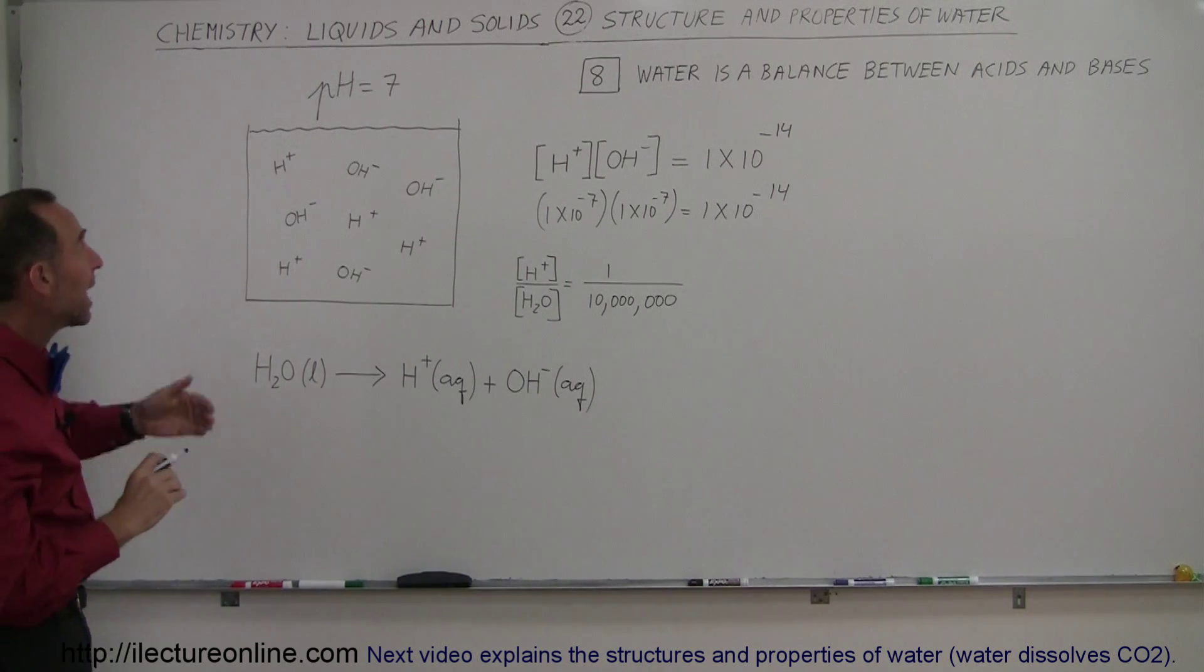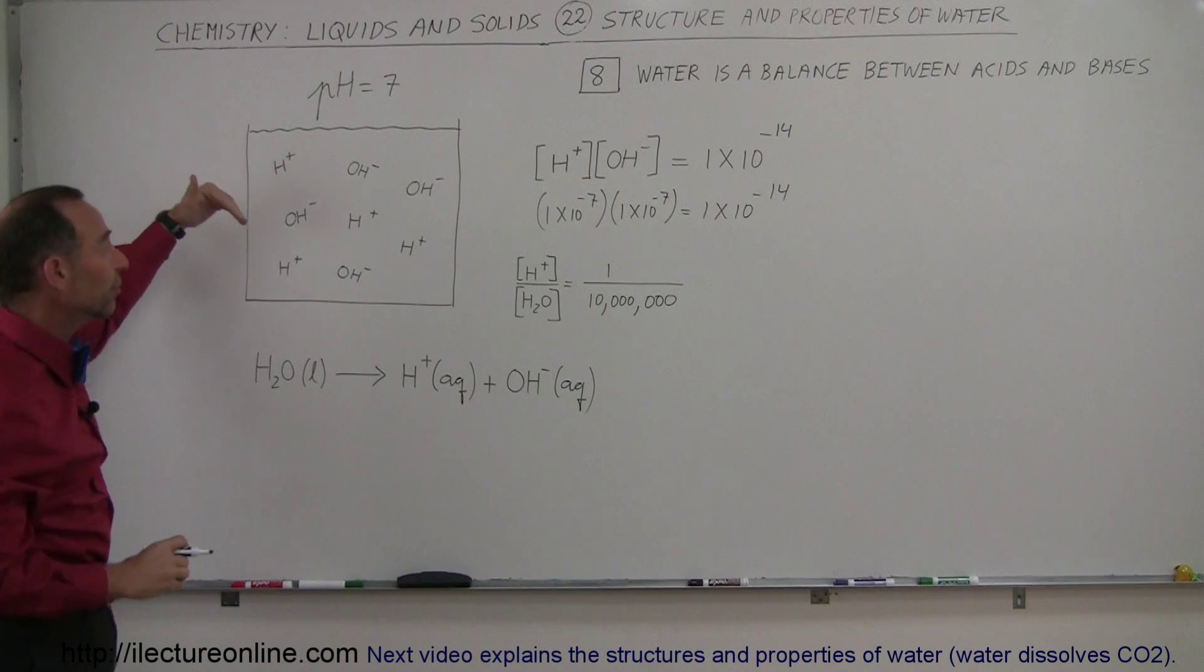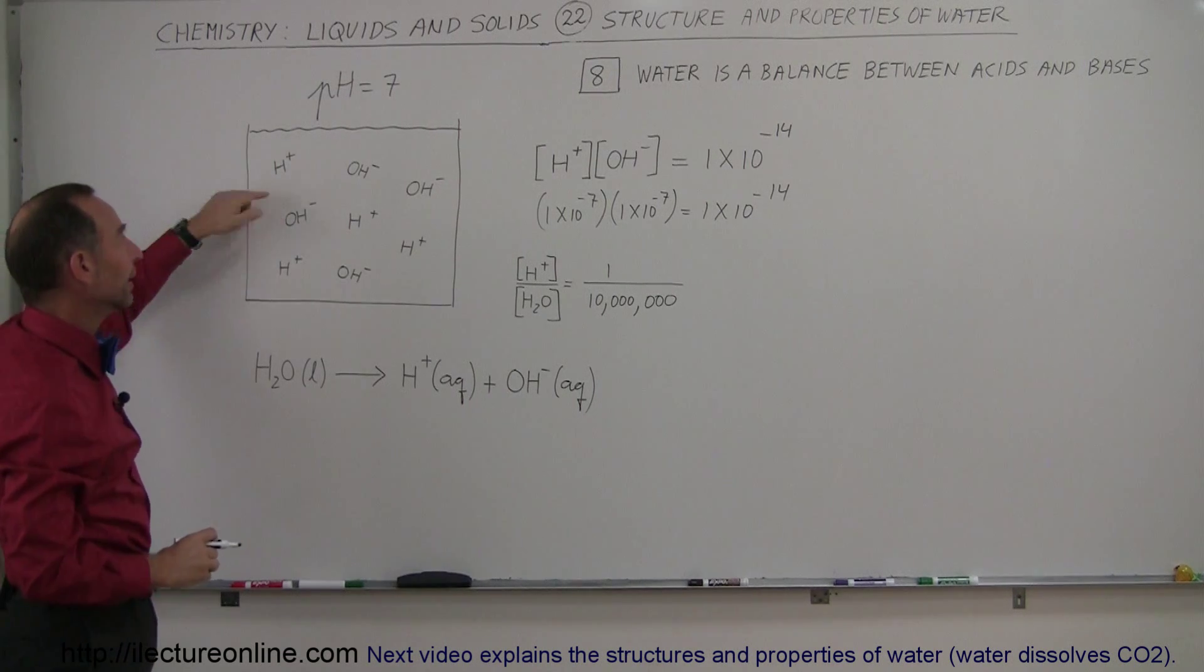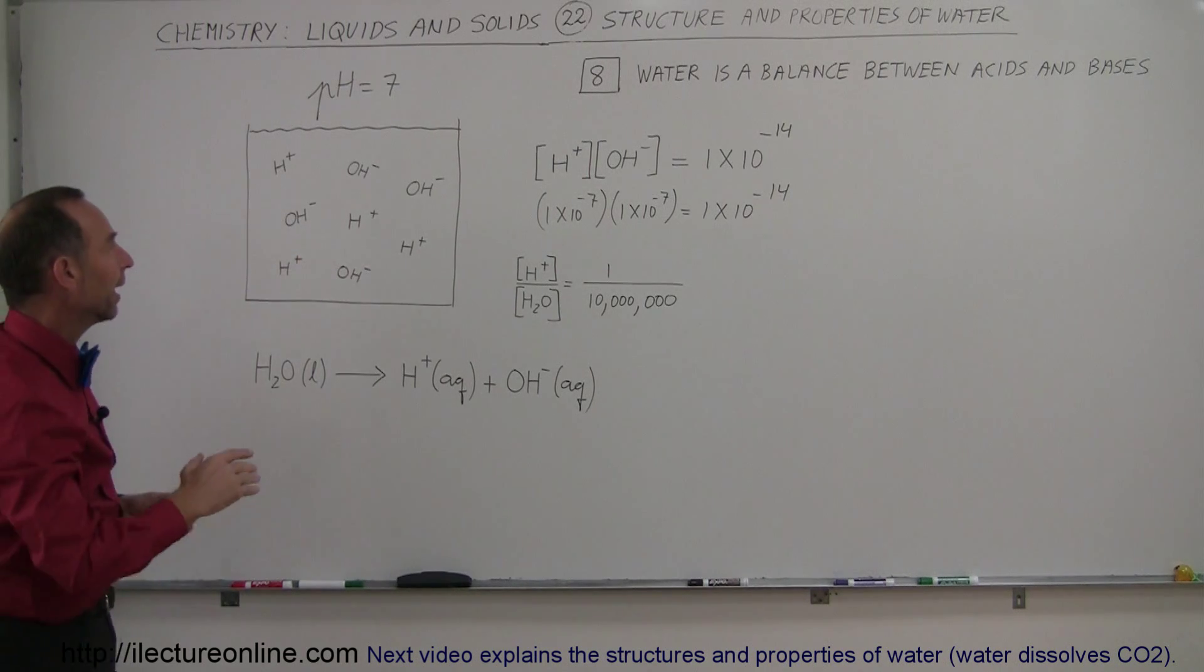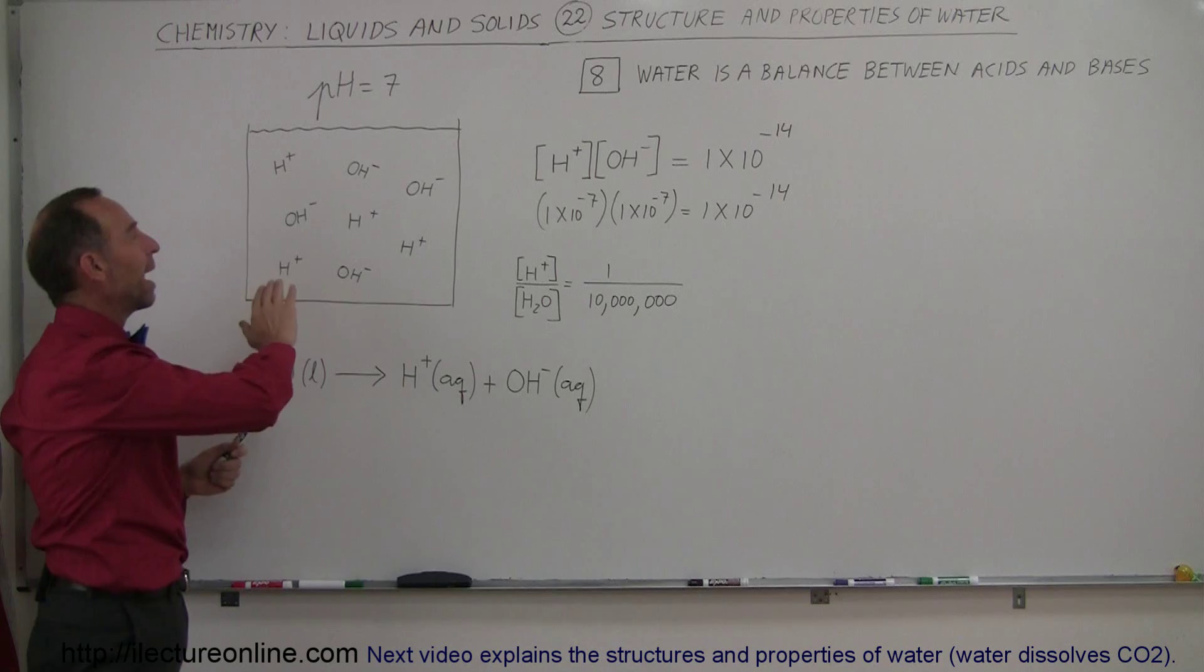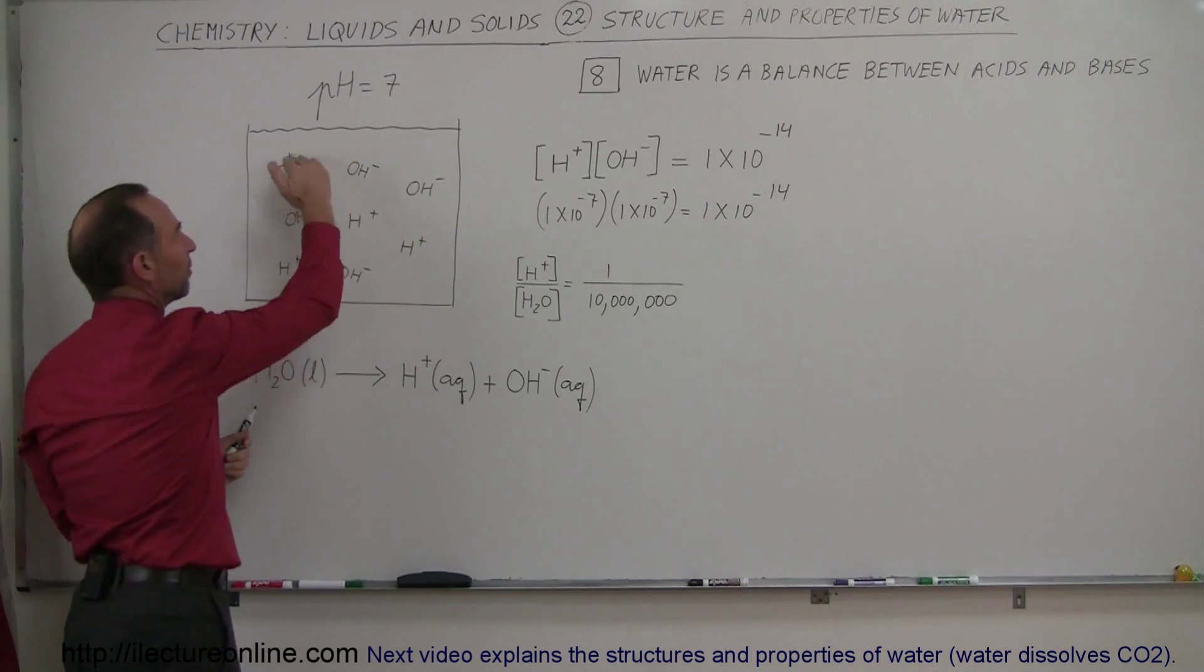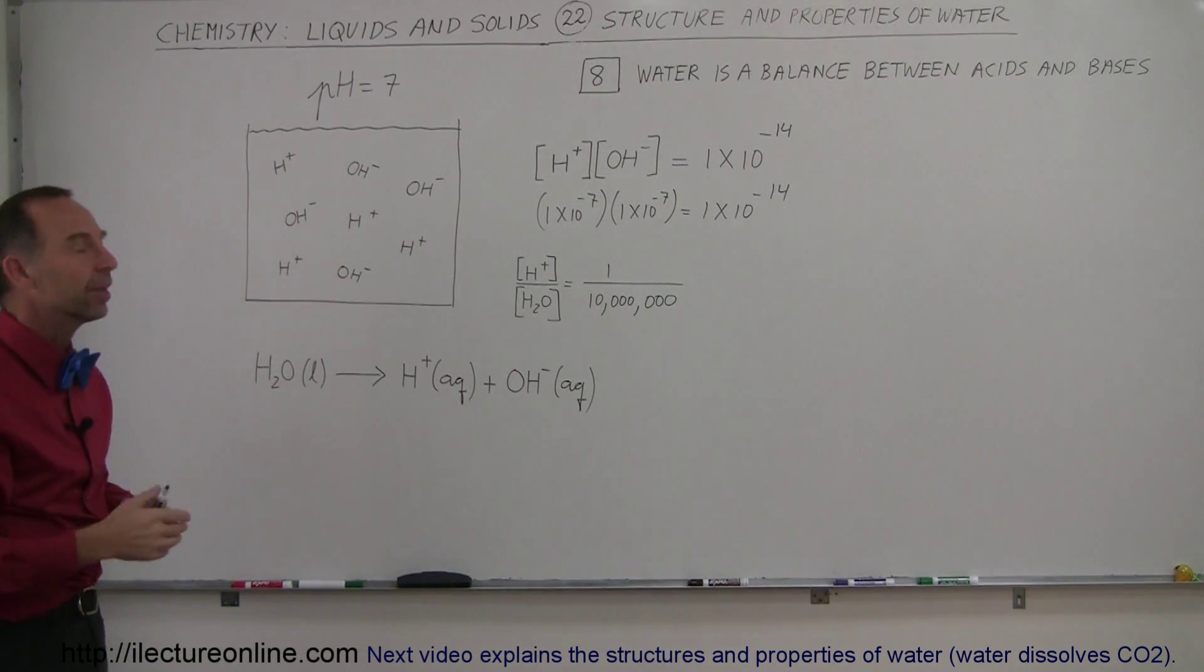So what happens when you add acid to water, or you add base to water? When you add acid to water, then more hydrogens will appear versus hydroxide ions, and so there'll be a mismatch. Hydroxide ions will disappear, more hydrogens will appear, and it'll become more acidic.